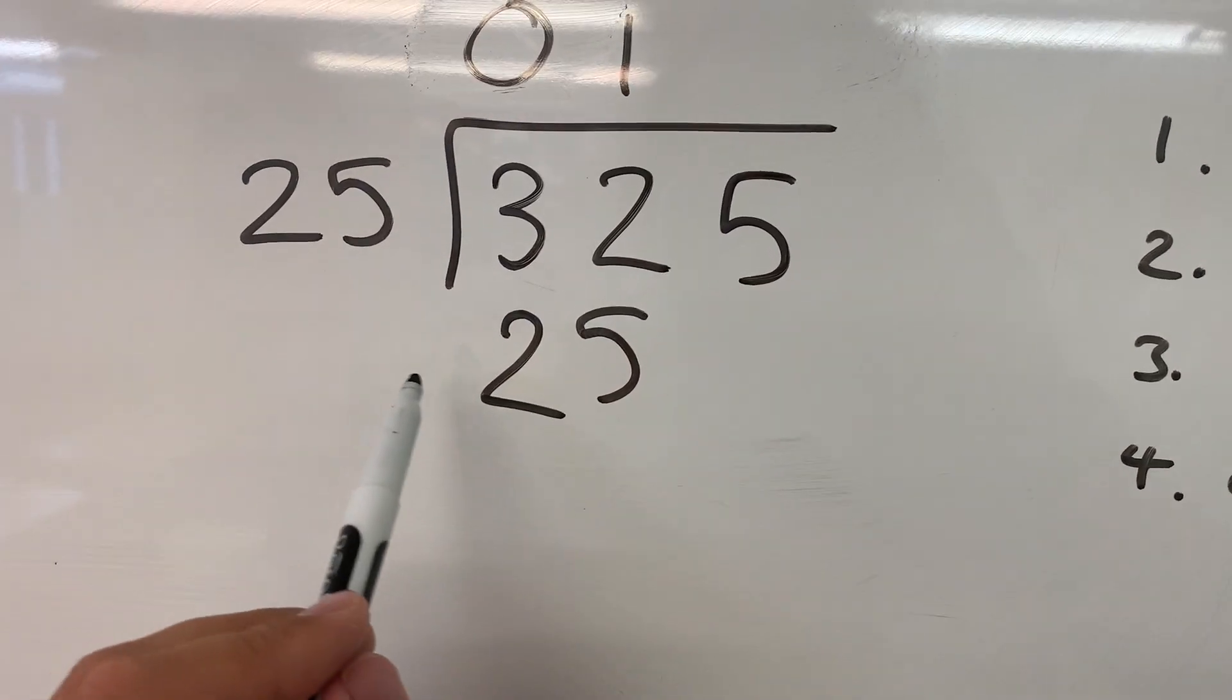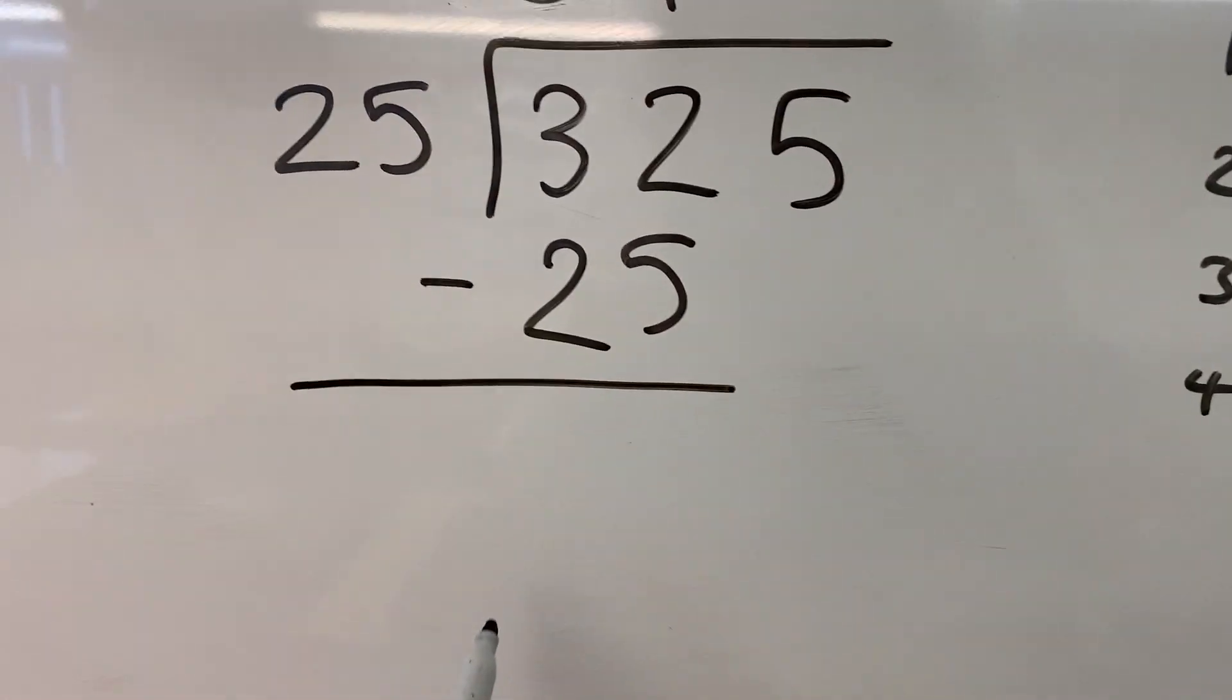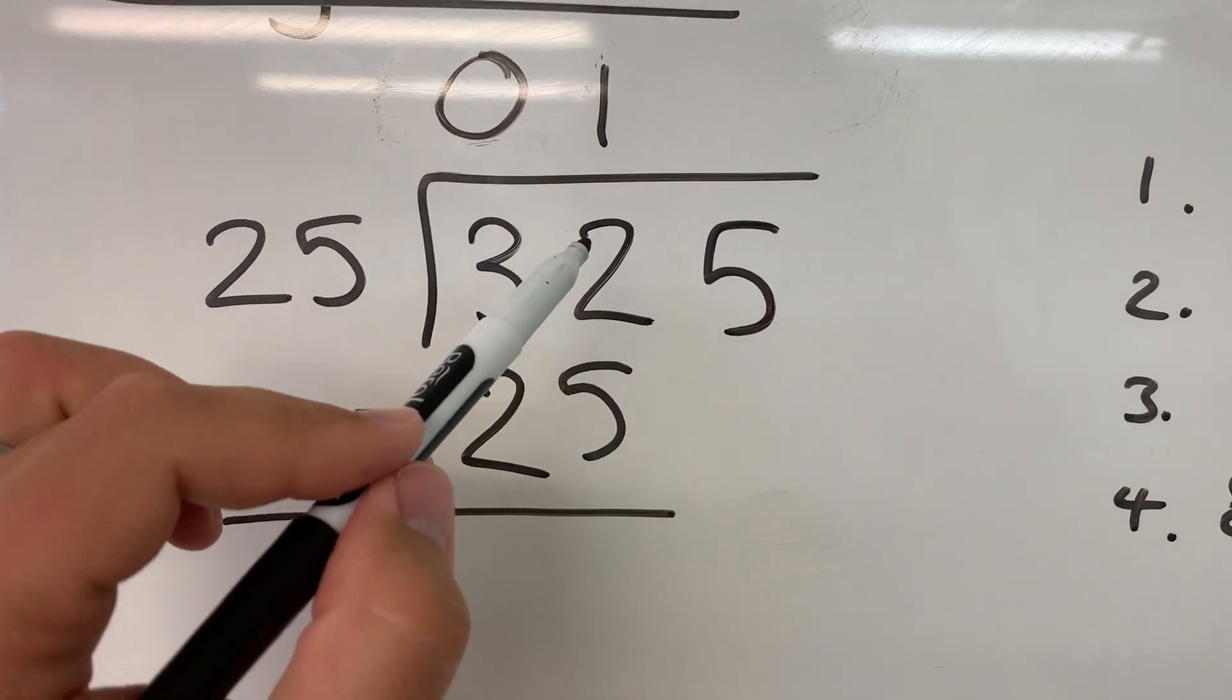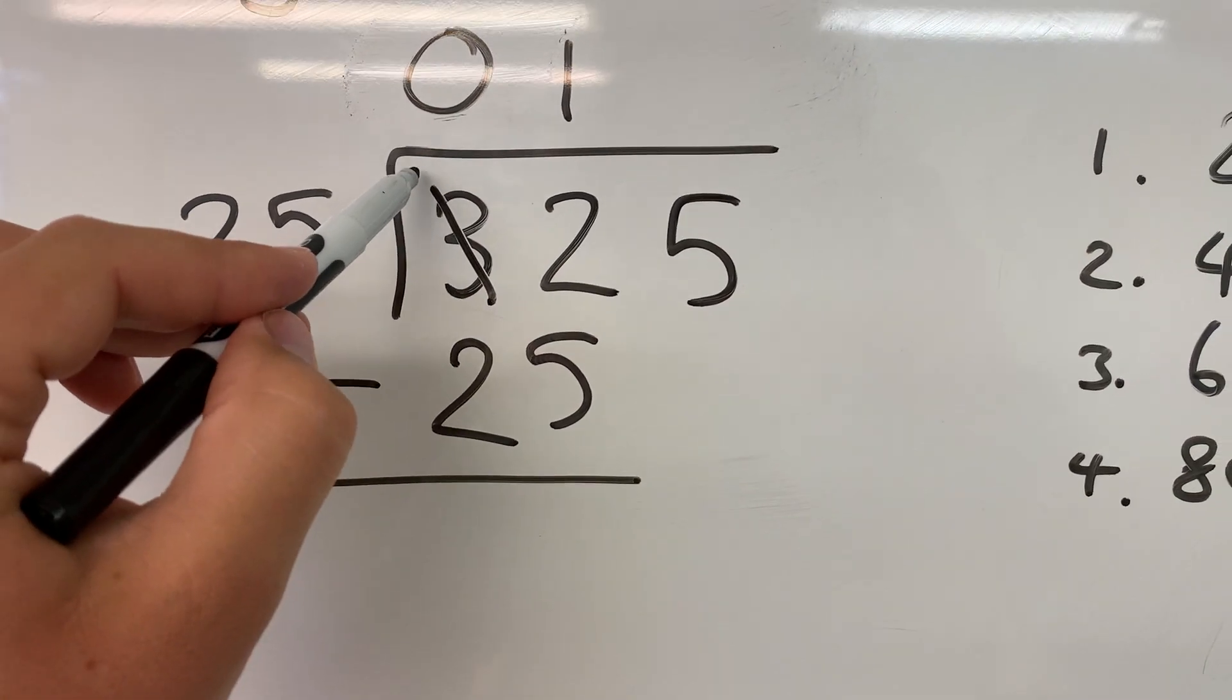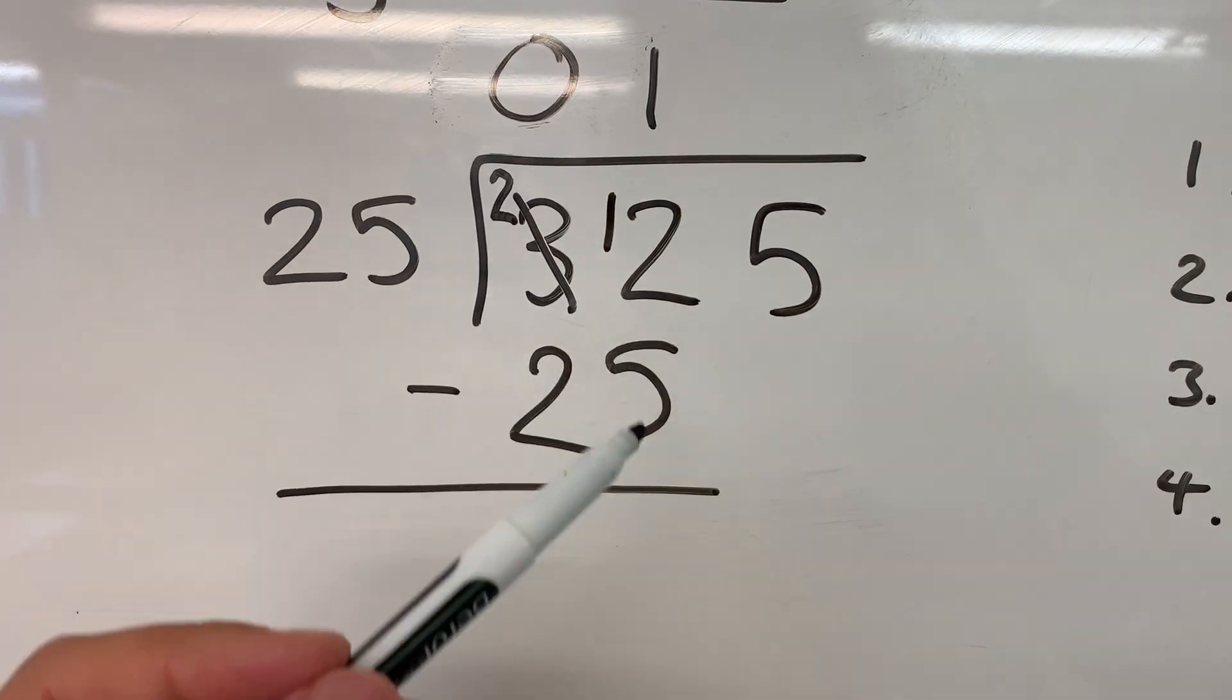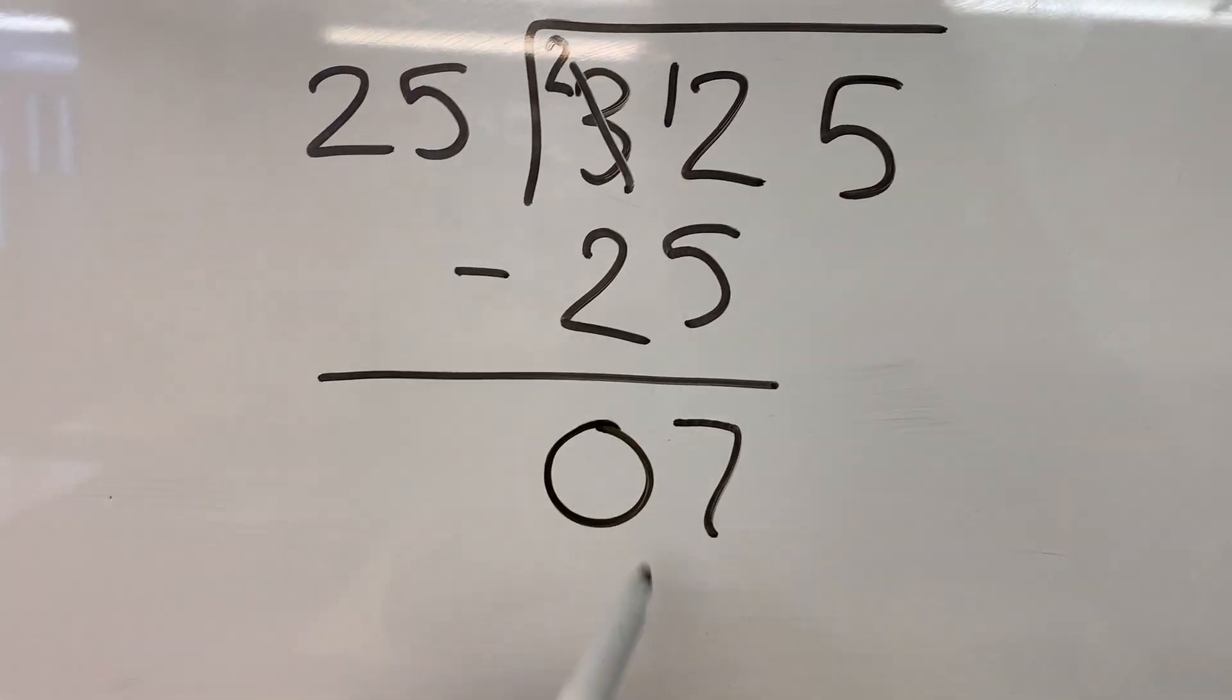We're in a rush to get to zero when we're dividing, so what we need to do now is subtract that 25 from 32. And we do this using the formal written method, which we practiced earlier in the week. You can't do two take away 5, so we need to steal some from here and pop them in the next column. Now we've got 12, take away 5, which is 7, and 2, take away 2, which is 0.